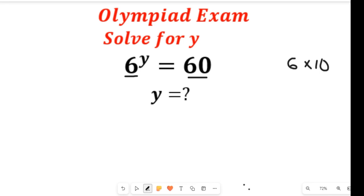But the best way to simplify this is to take the log of both sides. Now, if we take the log of both sides, we'll have log of 6^y equal to the log of 6 multiplied by 10. And if we simplify that,